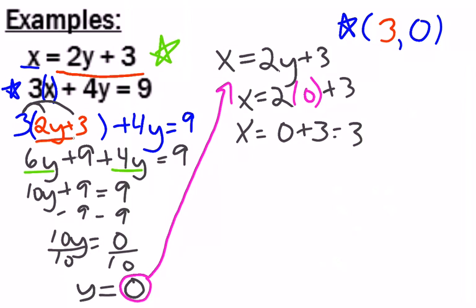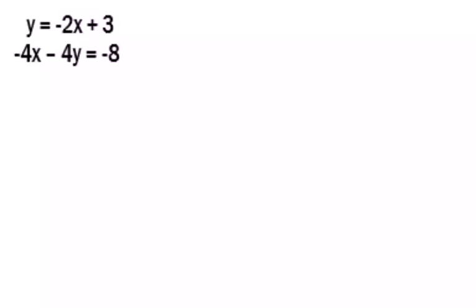So what did we do? We substituted for x, solved for y. Then we substituted for y and solved for x. So my answer was 3, 0 for that one.